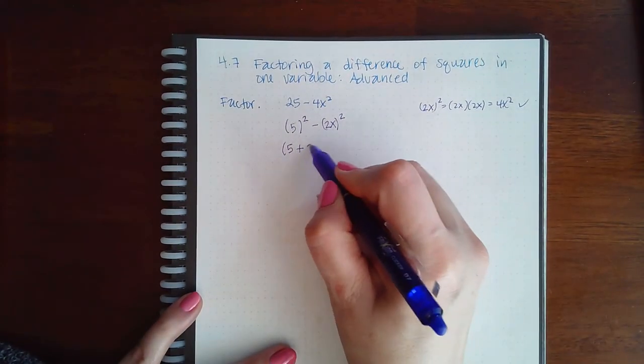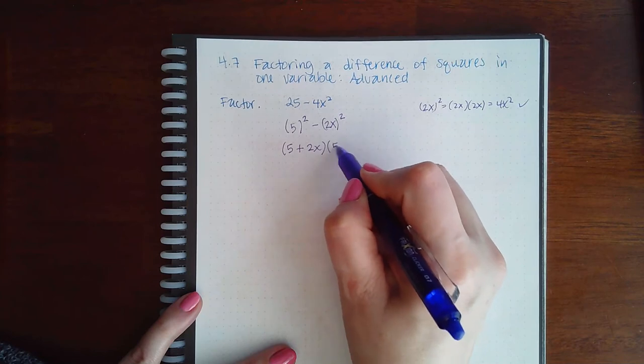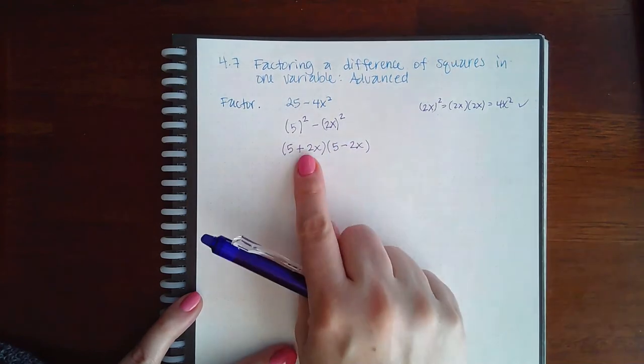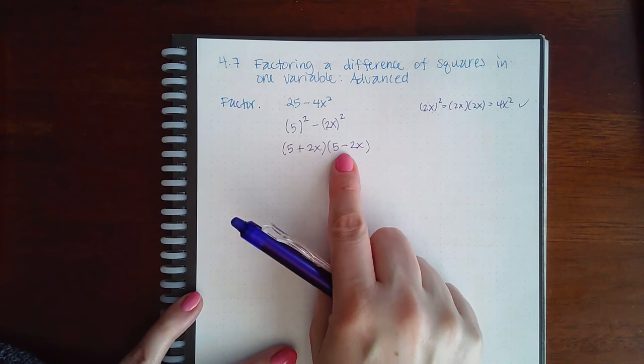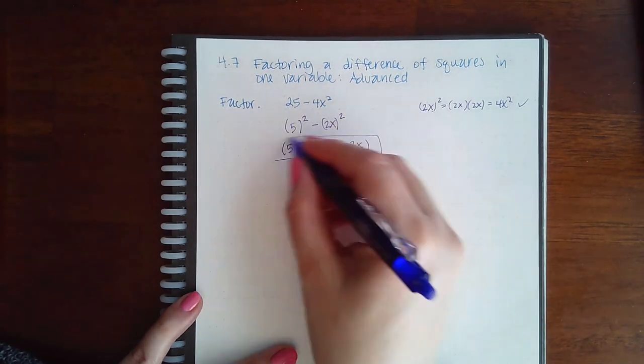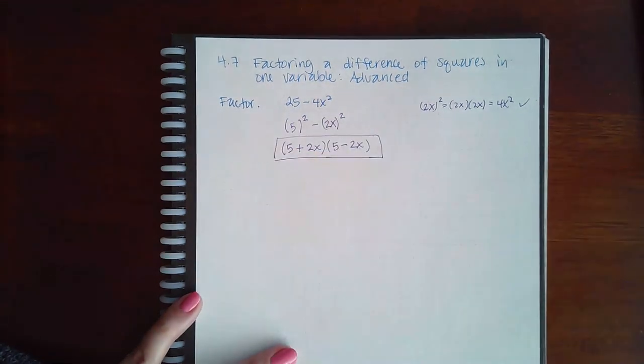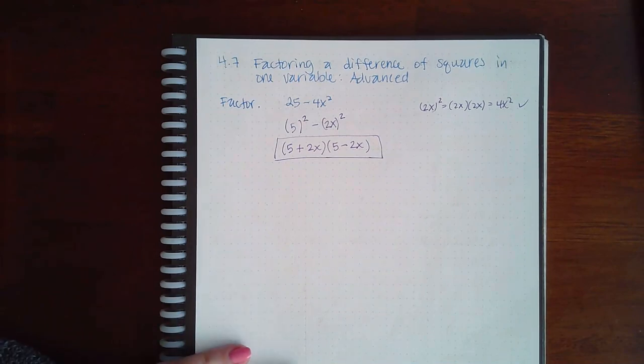And 2x is going to go in the back. One expression has to have a plus and one has to have a minus, and then I'm done. You could multiply it out to check it if you want to, but I'm going to leave it at that.